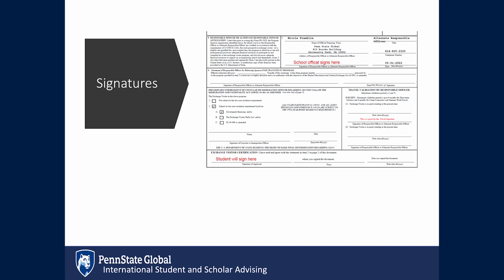Signatures and attestations are found at the bottom of the DS-2019. You will sign at the very bottom, and please add the date to your document.